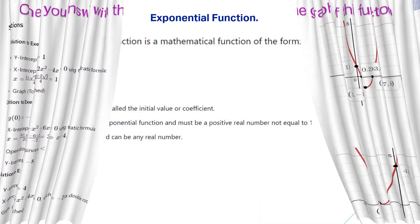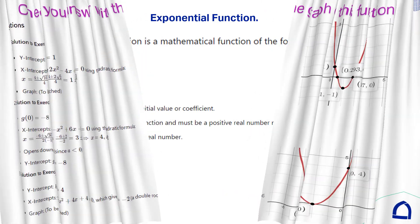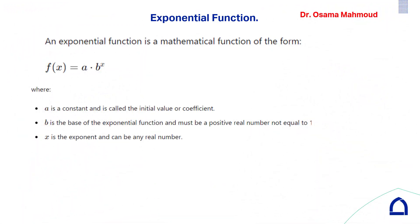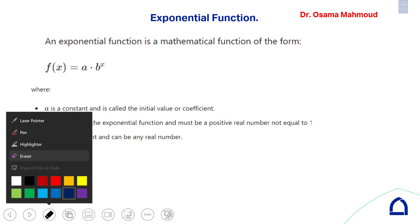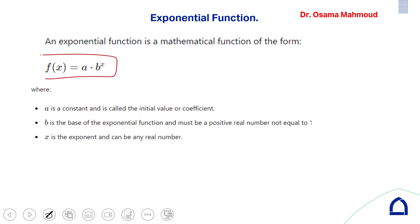The next function is the exponential function. Its form is f(x) = a × b^x, where a is a constant and b is the base. The base b must be a positive real number not equal to 1. x is called the exponent and b is called the base.